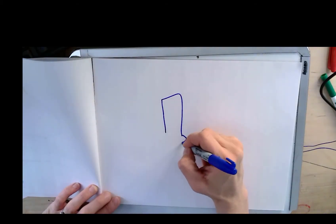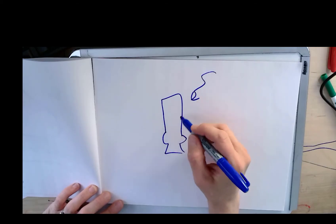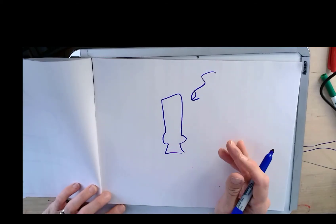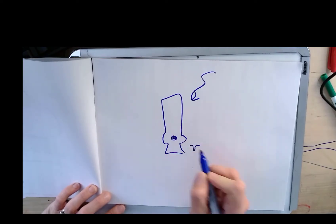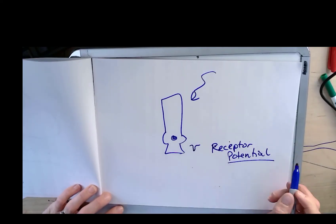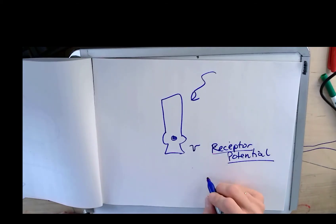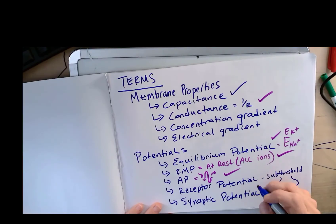The same sort of thing happens at receptors. In the case of a photoreceptor, light shines and that photon energy causes conformational changes in a cyclic GMP-gated channel, which ultimately results in a tiny change — in this case a hyperpolarizing current in the photoreceptor. That's called a receptor potential. We're talking about receptors in the sensory system — somatosensory receptors, photoreceptors, olfactory receptors, taste receptors, etc. That gets us through our terms, and we did already cover concentration gradient and electrical gradient.